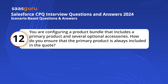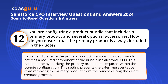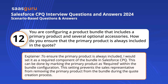Question 12. You are configuring a product bundle that includes a primary product and several optional accessories. How do you ensure that the primary product is always included in the quote? To ensure the primary product is always included, I would set it as a required component of the bundle in Salesforce CPQ, by marking the primary product as required within the bundle configuration. This setting prevents the sales representative from removing the primary product from the bundle during the quote creation process.